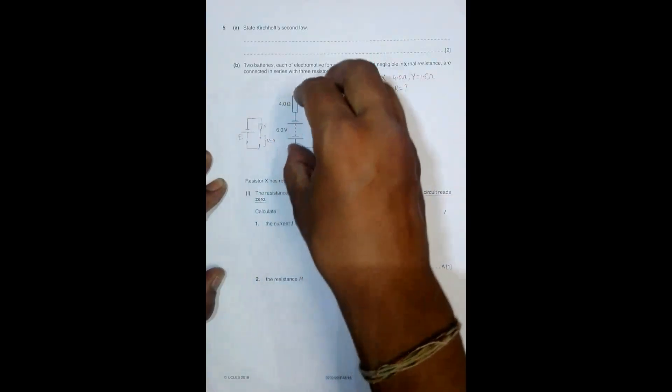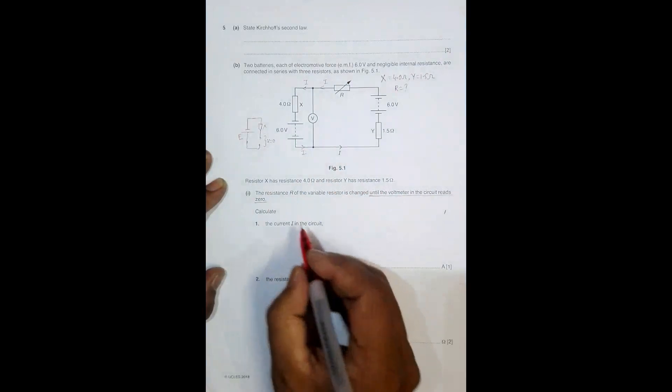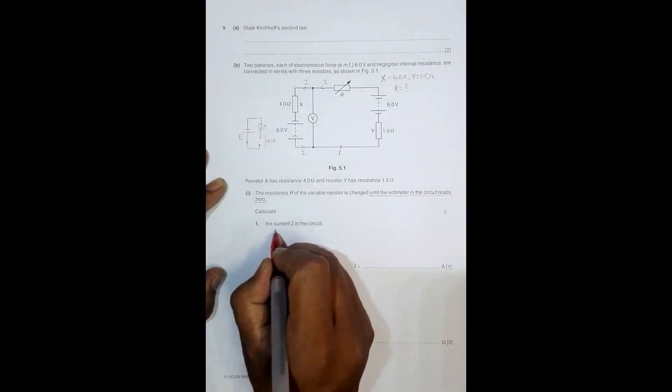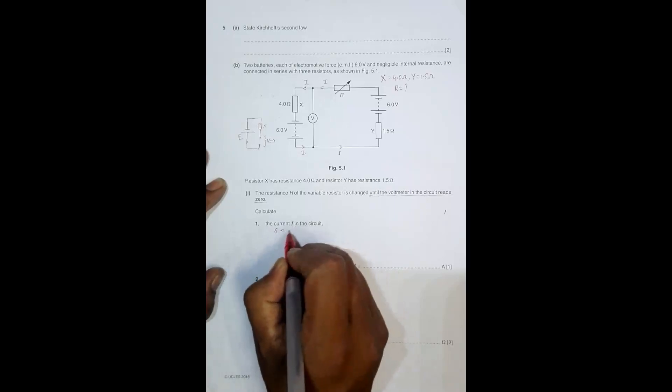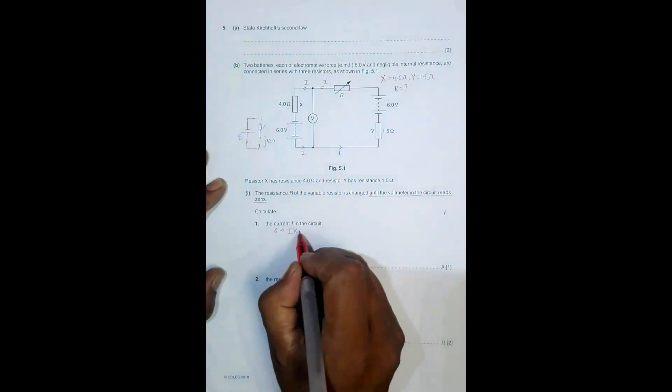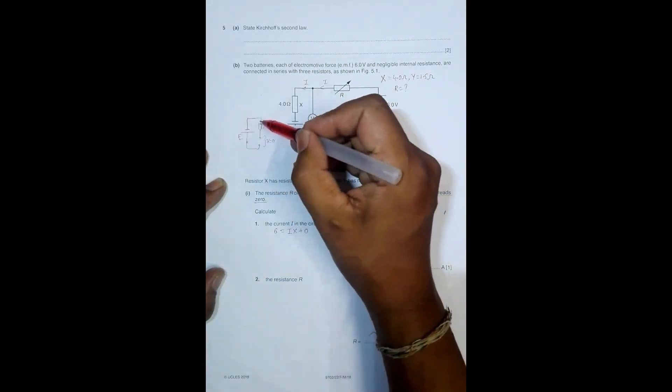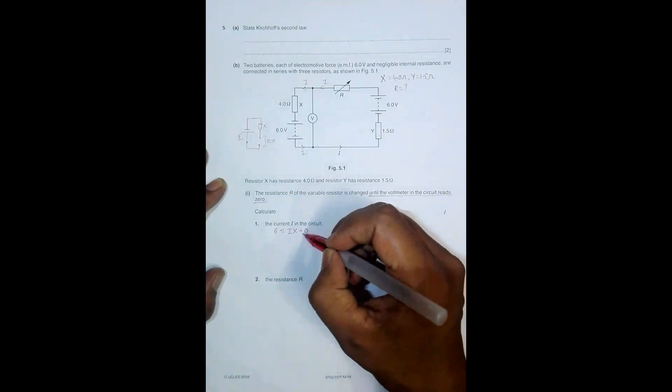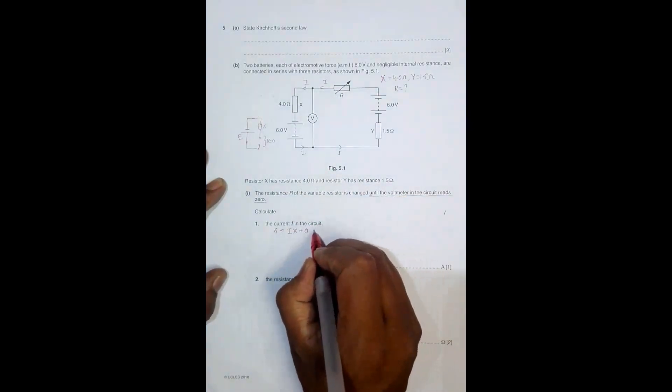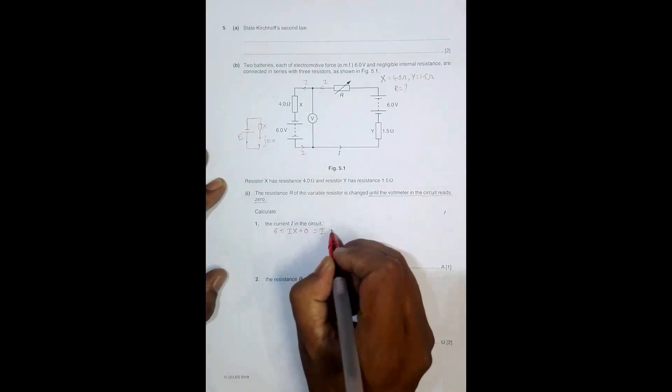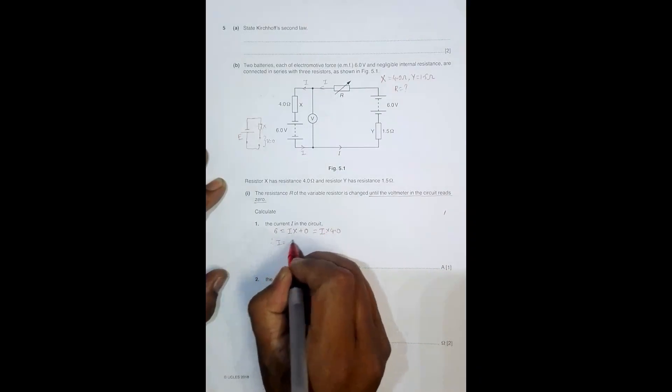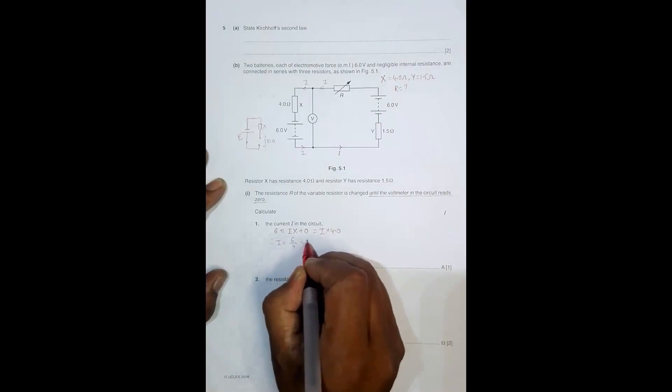In this part of the circuit, the EMF 6 volts equals current I into X plus zero volts, which is the PD here. So I times X equals 6, and I equals 6 divided by 4.0 ohm, which equals 1.5 amperes. That means the current in the circuit is 1.5 amperes.